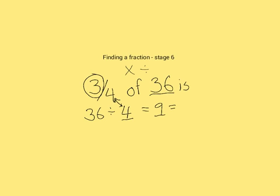We now know that one quarter is equal to 9. But what we want to find is three quarters. So we times 9 by 3. 3 times 9 is equal to 27. We times by 3 because that is how many pieces we have. That is our numerator.